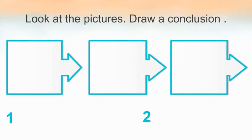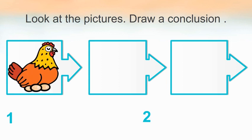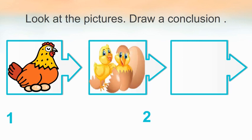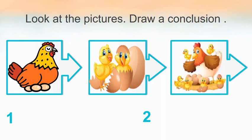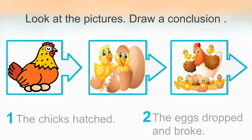Look at the pictures and draw a conclusion. First, we have a hen with some eggs underneath it. Next, we have some chicks coming out of some cracked eggshells. Last, we have a hen in its nest with some chicks and some more eggs. Can we say that one, the chicks hatched, or two, the eggs dropped and broke? What conclusion can we draw from these picture clues?